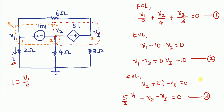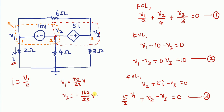For this circuit we have three simultaneous equations. By solving them we get the values: V1 = 70/23 volts, V2 = −160/23 volts, and V3 = 15/23 volts.